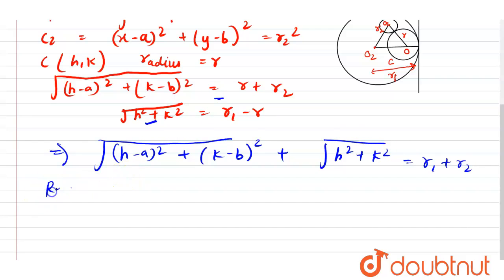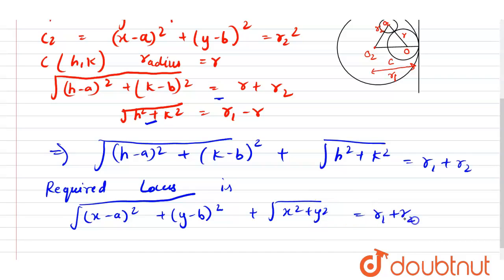So the required locus be x minus a square plus y minus b square plus x square plus y square is equals to r1 plus r2.